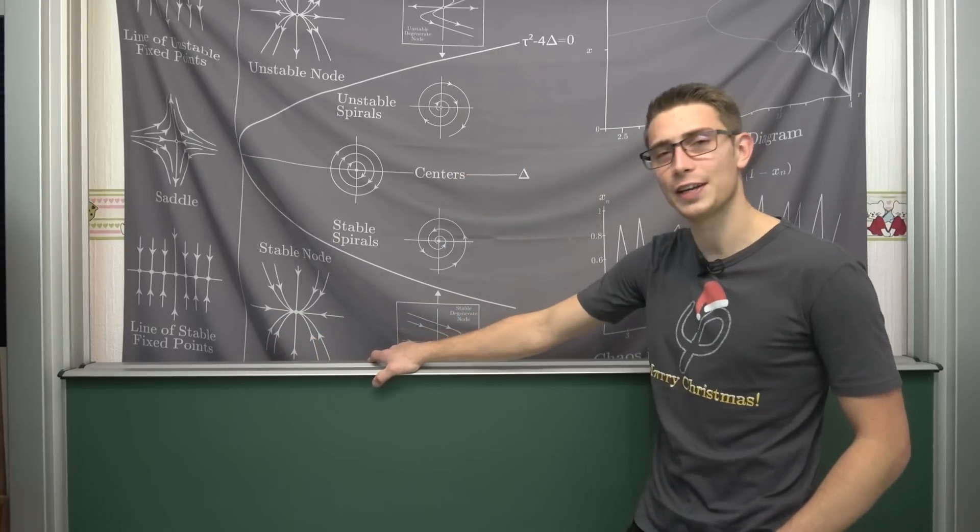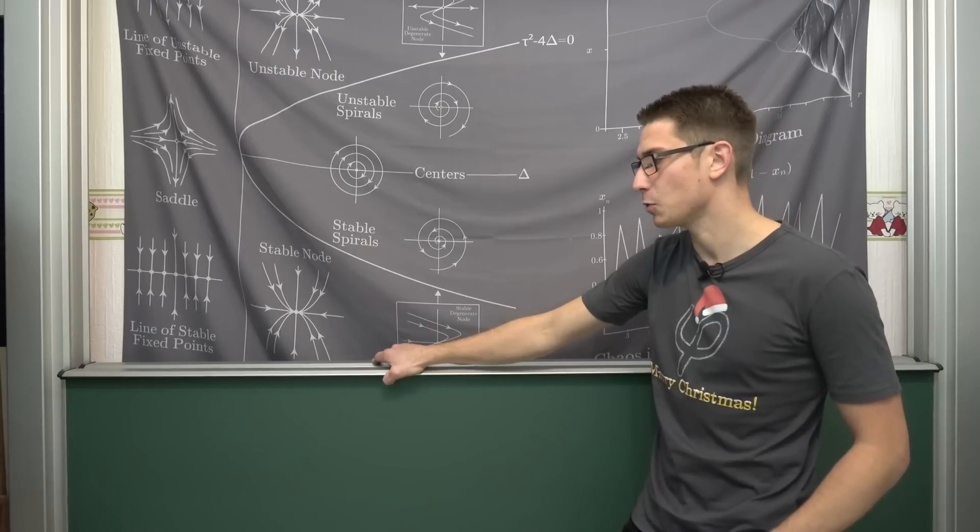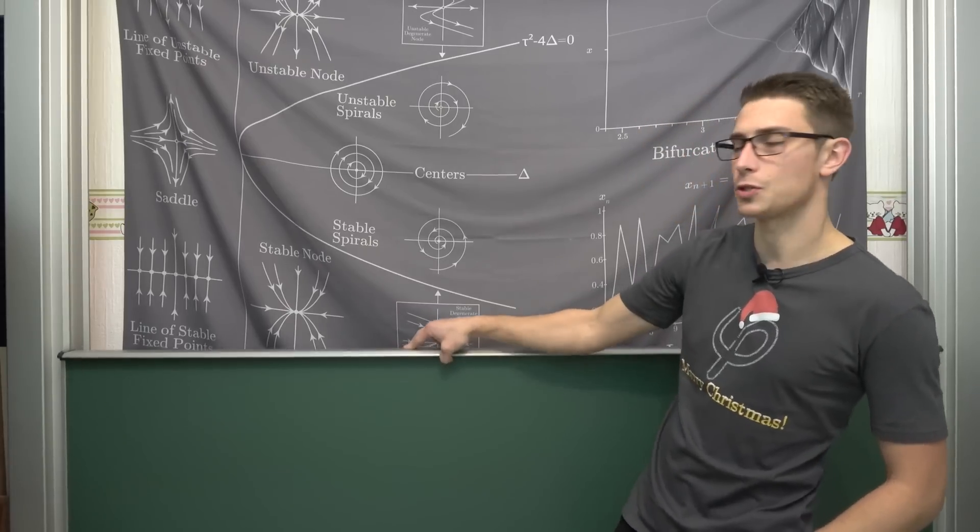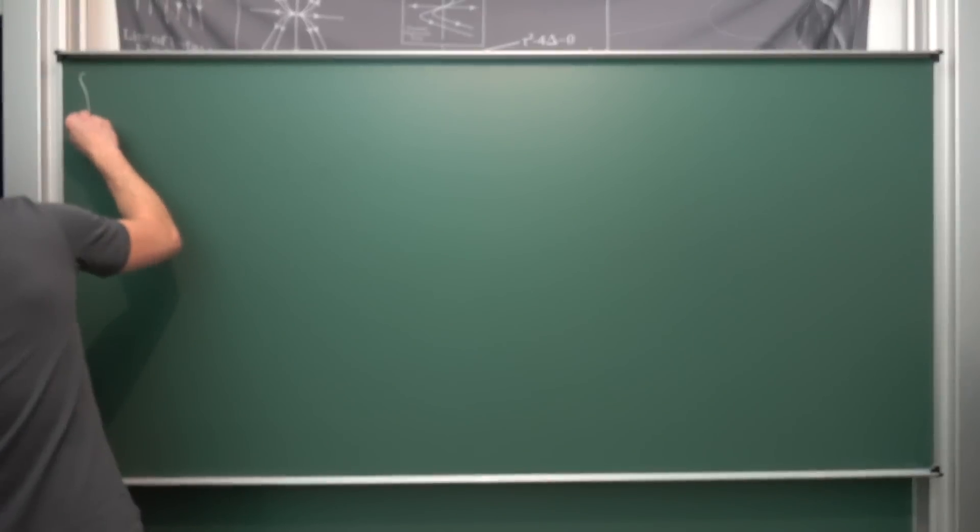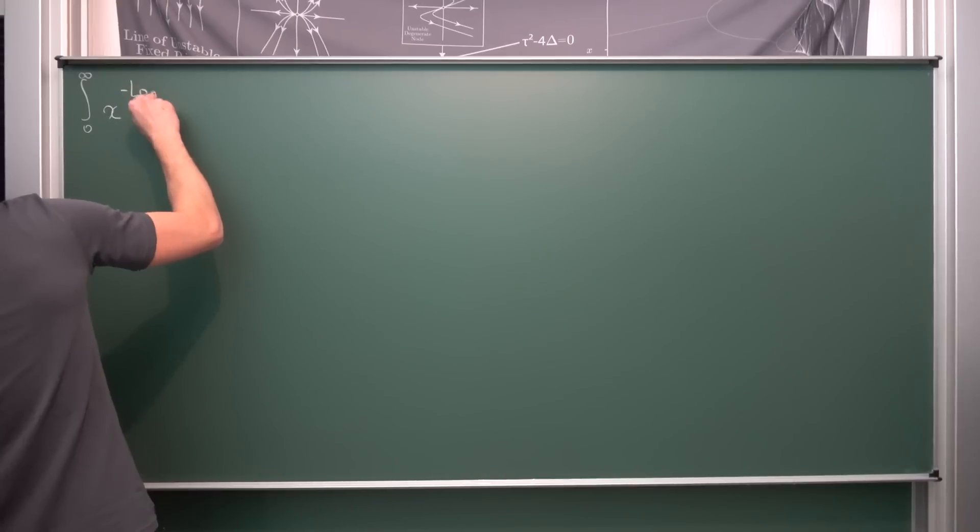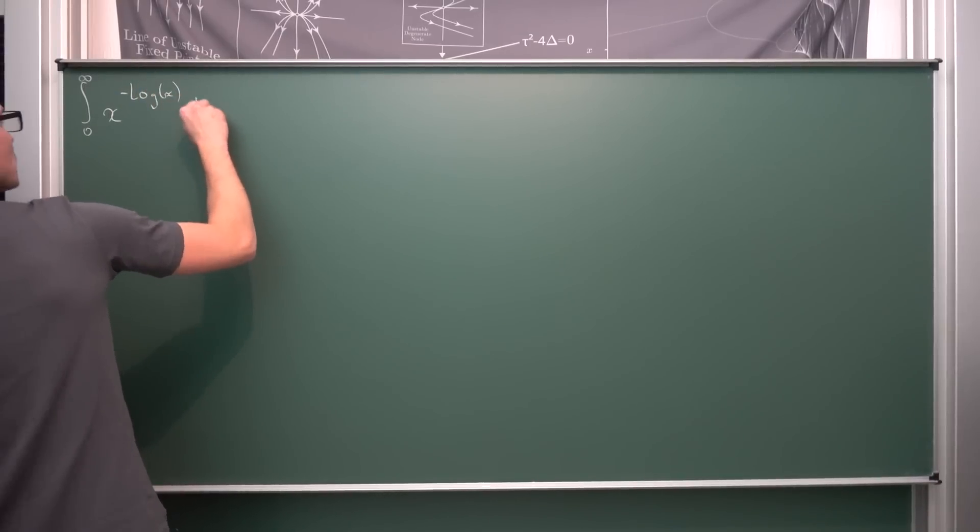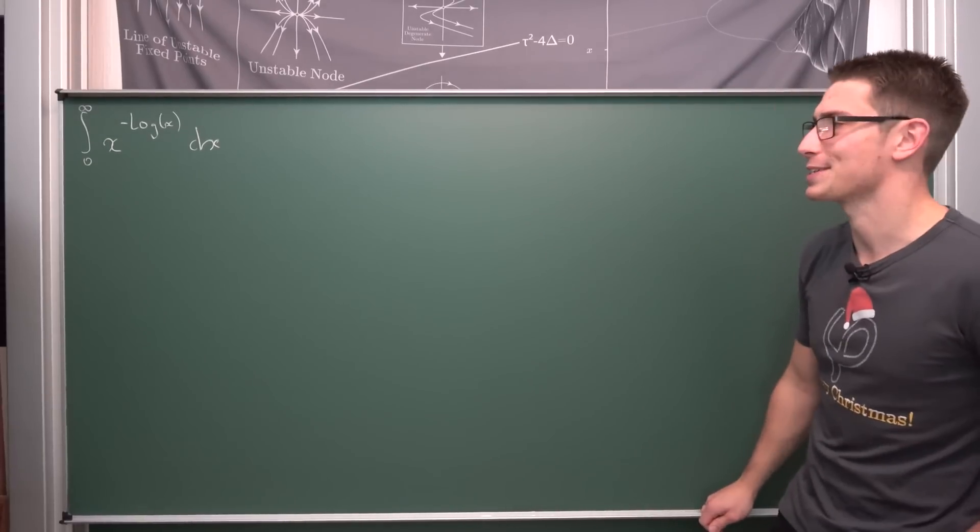We'll start with an improvised session. Someone became a Patreon supporter of mine a while ago and asked me to solve this integral: the integral from zero to infinity of x to the negative natural log of x, integrated with respect to x. I'm fairly certain I can solve it in an improvised session.